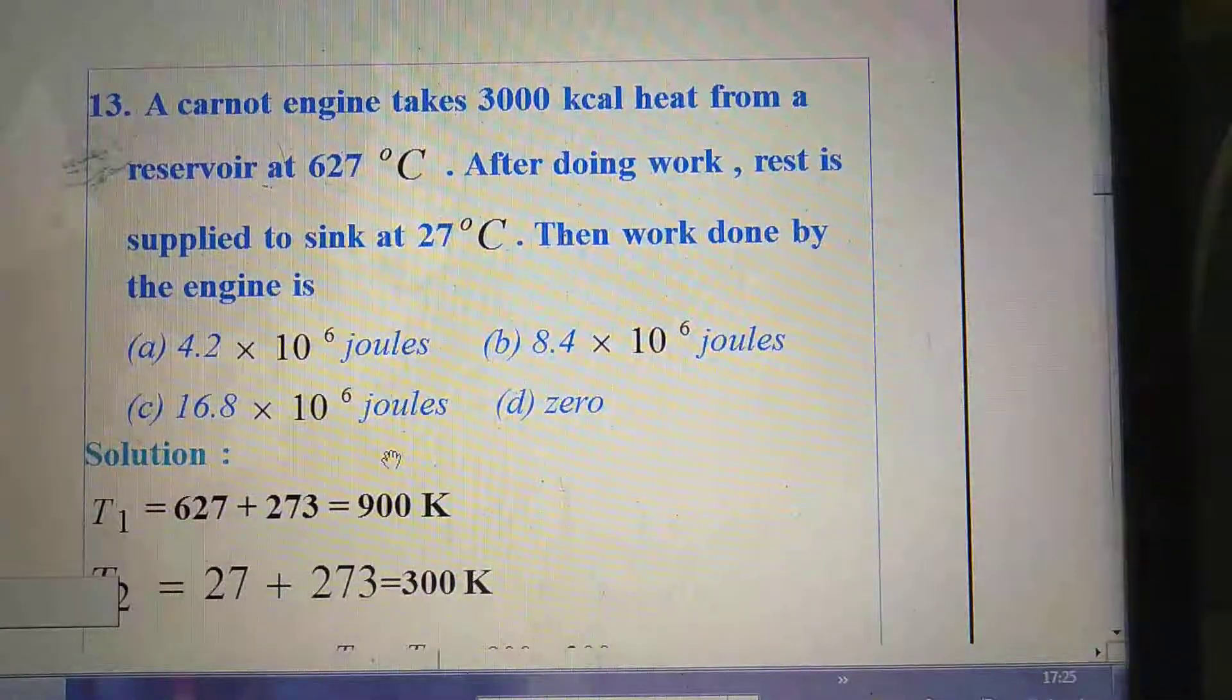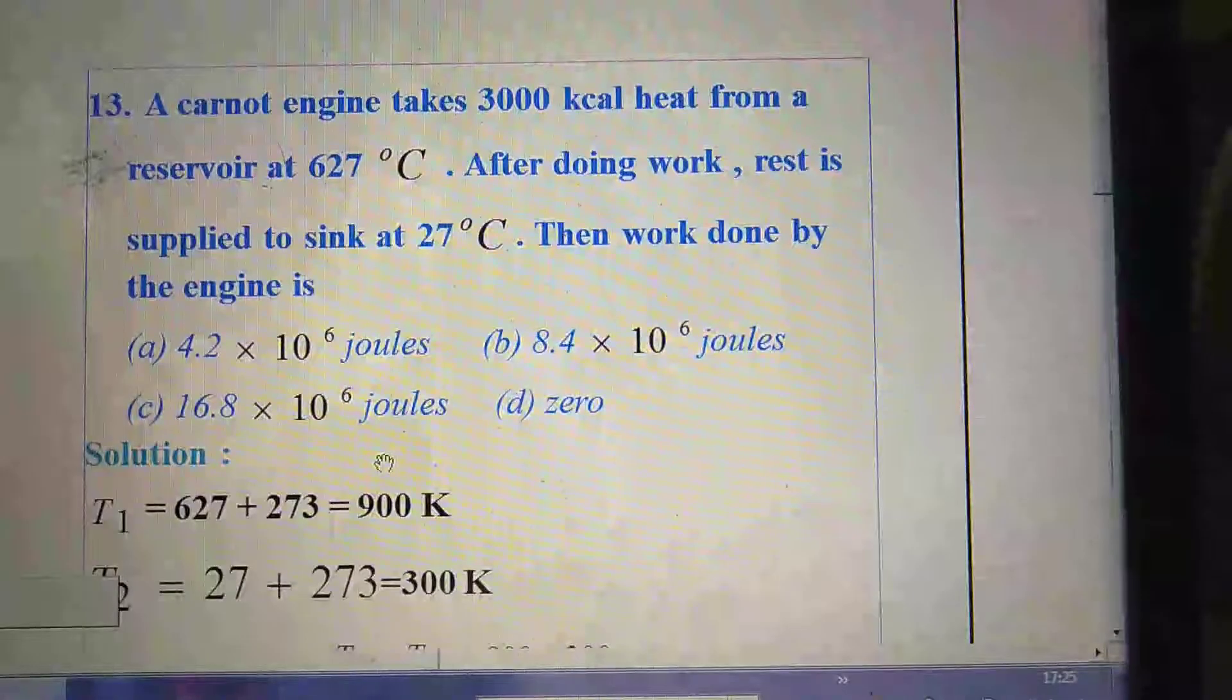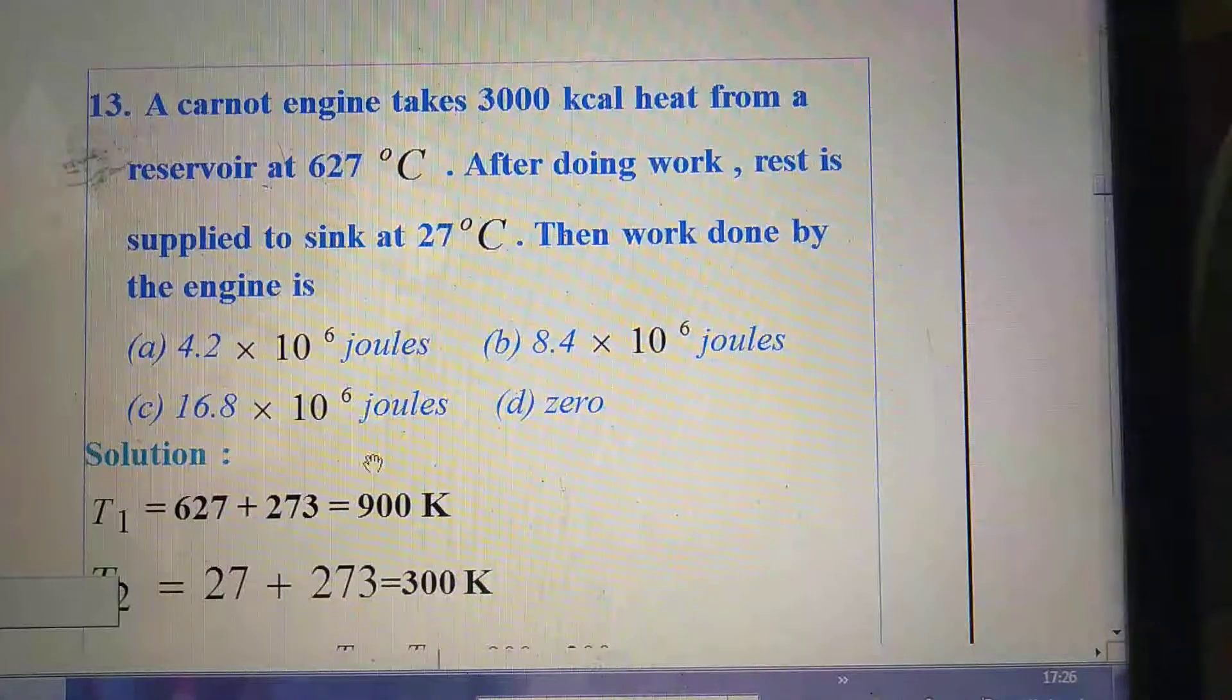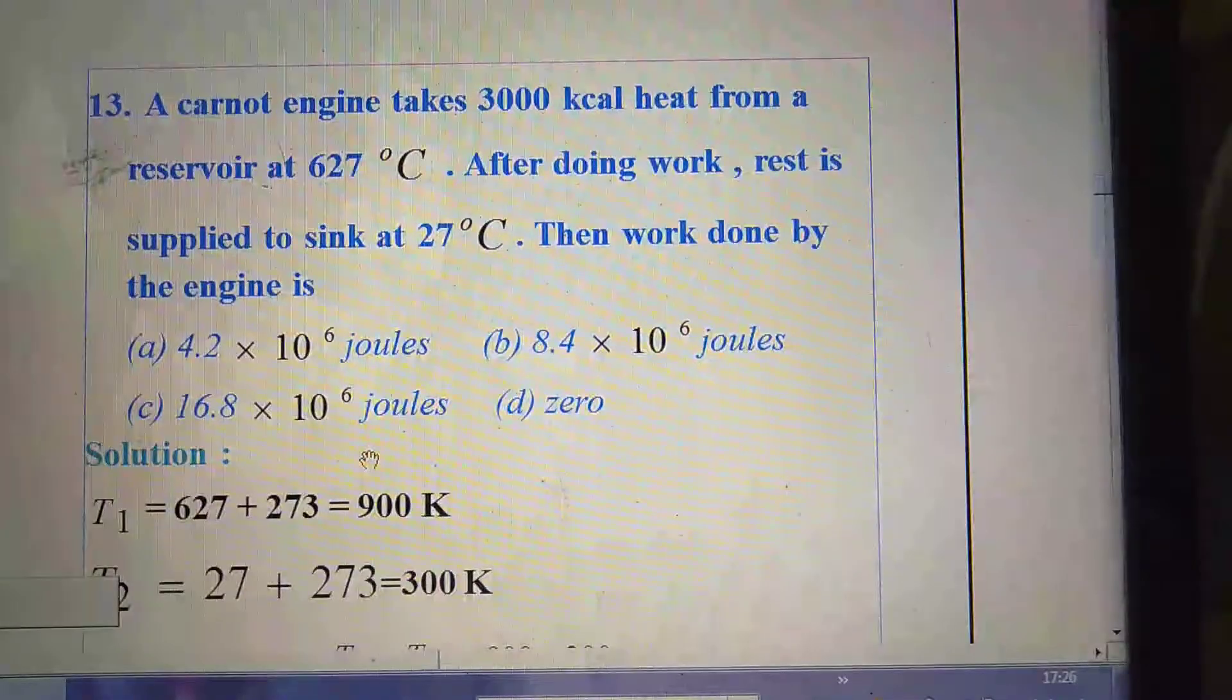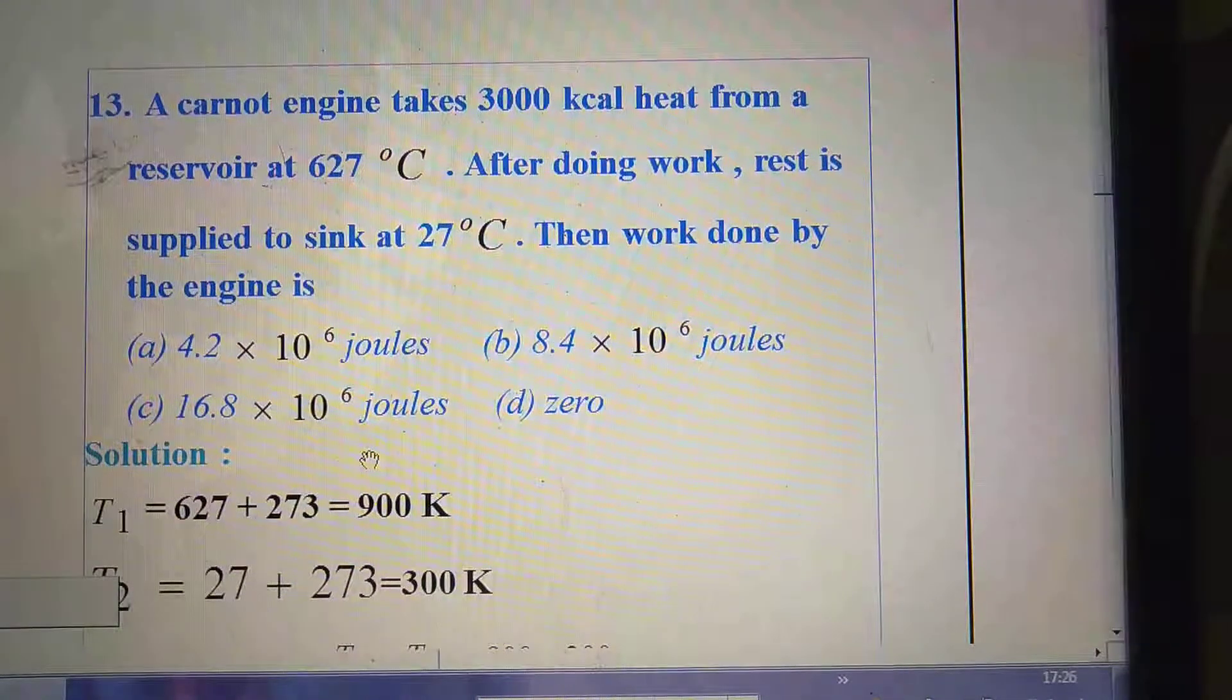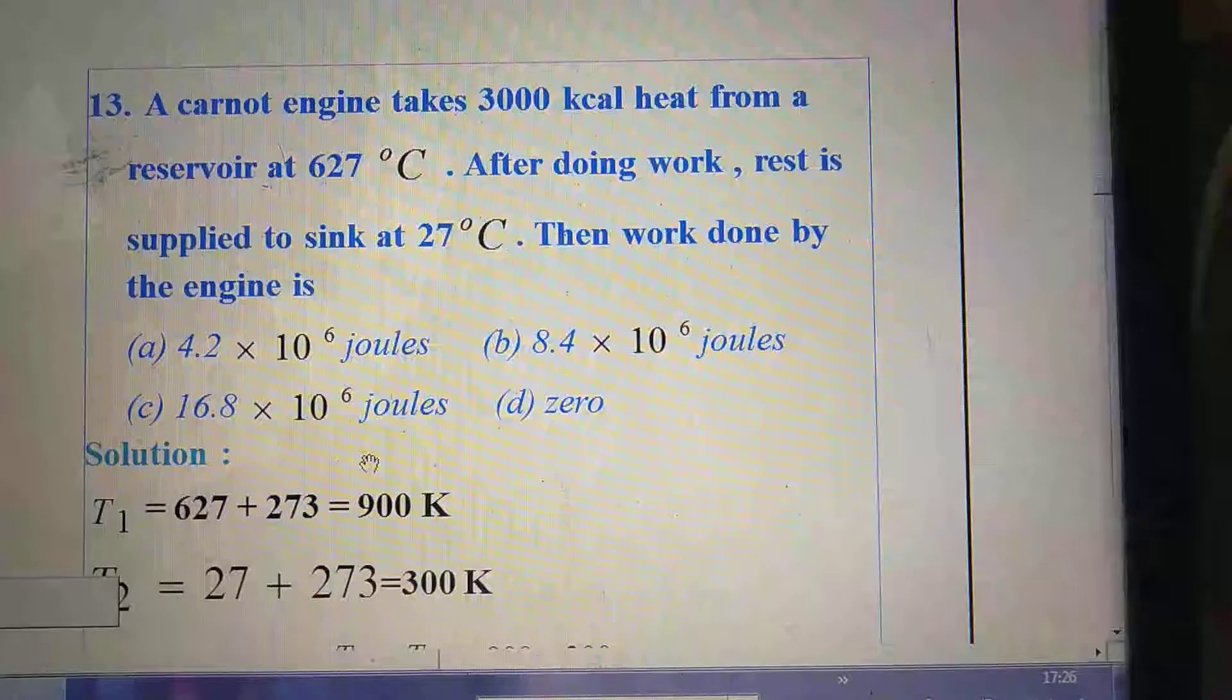Next question. A Carnot engine takes 3000 kilocalorie heat from a reservoir at 627 degree centigrade. After doing work, rest is supplied at 27 degrees centigrade. Then work done by the engine is option A 4.2 × 10⁶ joule, option B 8.4 × 10⁶ joules, option C 16.8 × 10⁶ joules, option D zero.